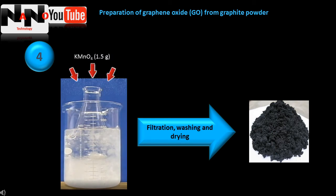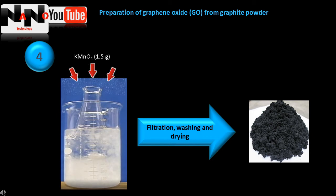Then 1.5 gram potassium permanganate is slowly added to the mixture while kept in an ice bath. After filtration, washing, and drying, the graphene oxide was obtained as a brown powder.